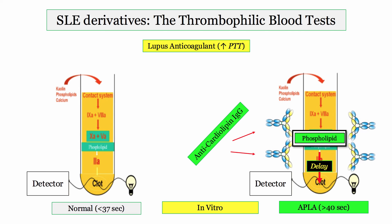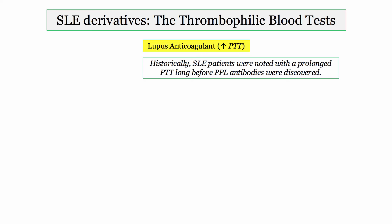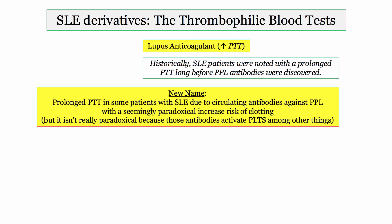In a patient with antiphospholipid antibody syndrome, antibodies interfere with the phospholipid component of the PTT test, causing a delay in clot formation — so the PTT will be prolonged. Importantly, this is a laboratory phenomenon alone; clinically, these patients present with thrombotic complications. Historically, prolonged PTT in some SLE patients was observed before antiphospholipid antibodies were discovered, so the name 'lupus anticoagulant' simply stuck. In reality, those antibodies activate platelets among other things, predisposing to clotting — hence the apparent paradox.